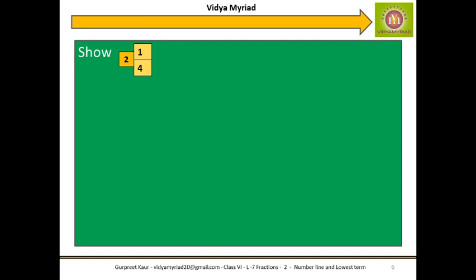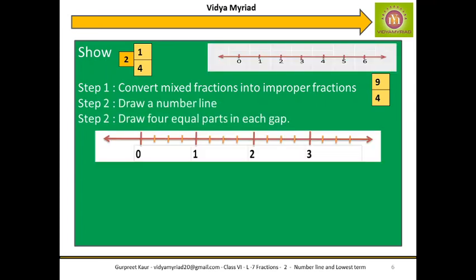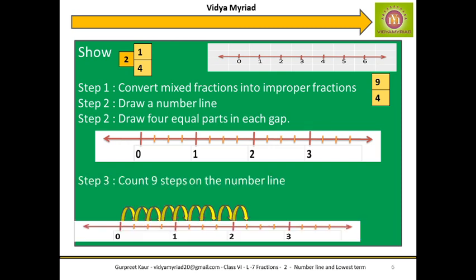Now let us see how we can draw a number line for a mixed fraction. First I will convert the mixed fraction into an improper fraction, which becomes 9 upon 4. How? 4 times 2 is 8, plus 1 is 9, so it is 9 upon 4. I will draw up to 9 and make 4 equal parts, count 9 steps, and get the answer 9 by 4, which equals 2.25 — very close to 2, so the answer is correct.